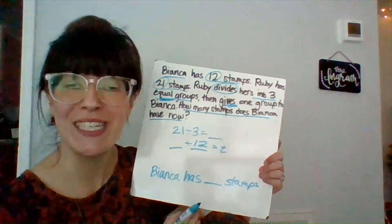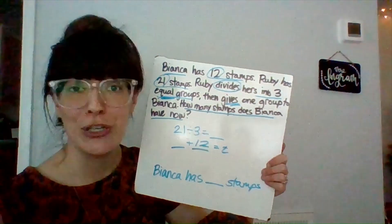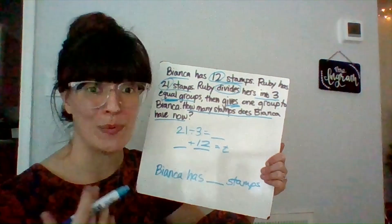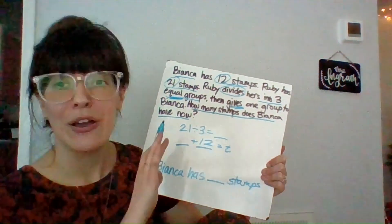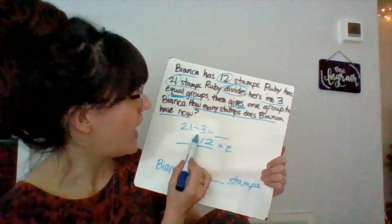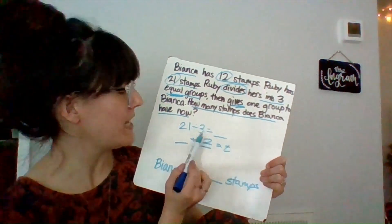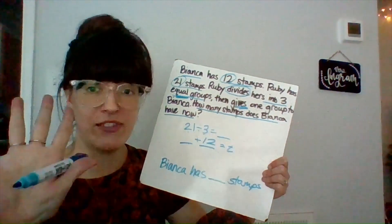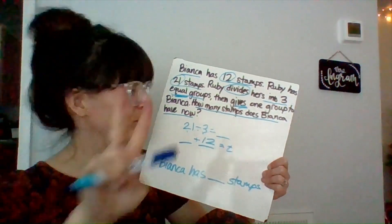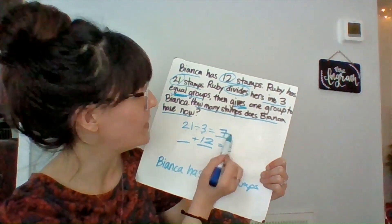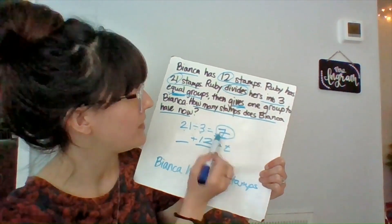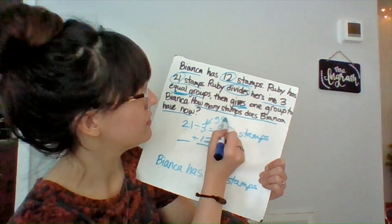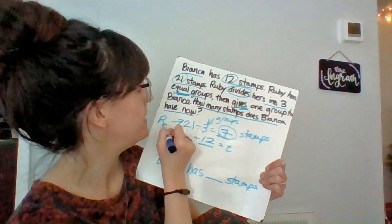So step one of my problem is 21 divided by three. Now whatever strategy you would use to divide is fine. We could use equal groups. We could use a bar model. We could use repeated subtraction. Whatever you would use is fine. I prefer skip counting. So I'm going to count by threes until I get to 21. Three, six, nine, 12, 15, 18, 21. So I had seven groups of three. So I know 21 divided by three equals seven. And that's seven stamps. So these were the three groups. These are Ruby's stamps.